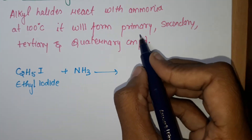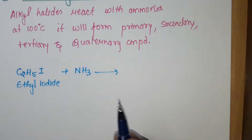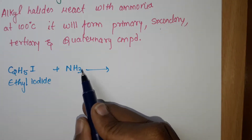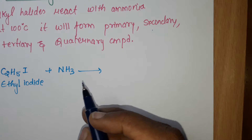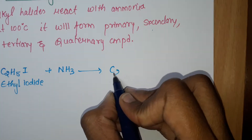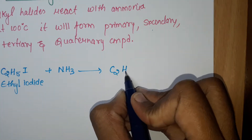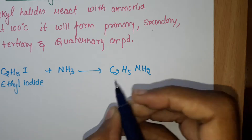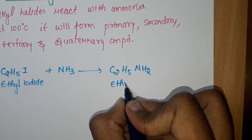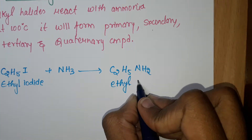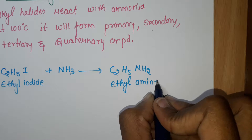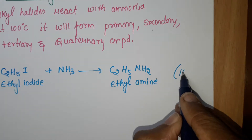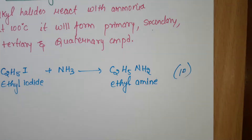Alkyl halide reacting with ammonia will give C2H5NH2 — this is ethyl amine, and this is a primary amine.